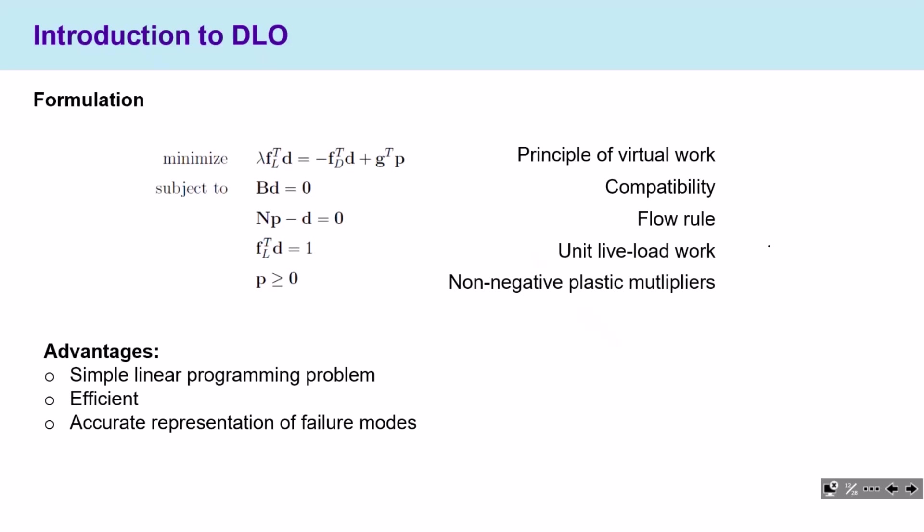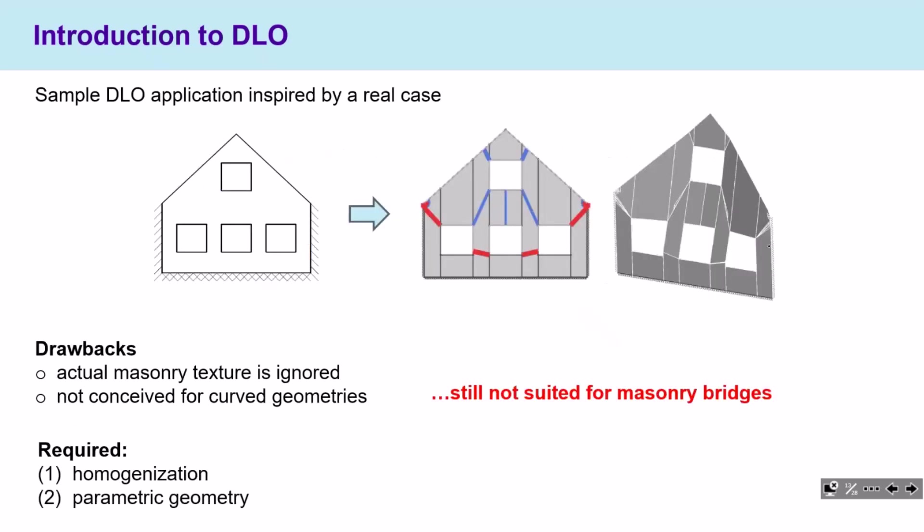The advantages are that this is a simple linear programming problem that can be solved in a very fast and efficient way even with a high number of unknowns. Applied to DLO, it allows representing failure modes in a very accurate way. This example shows we already applied this DLO scheme to a simple situation inspired from real existing cases — a masonry façade inspired by a typical UK façade subject to out-of-plane loading.